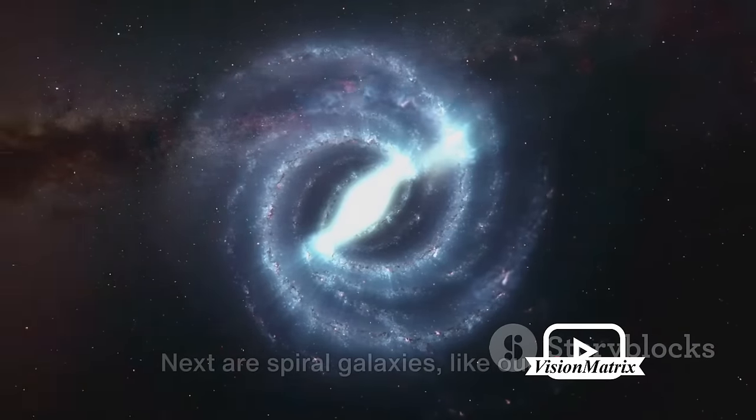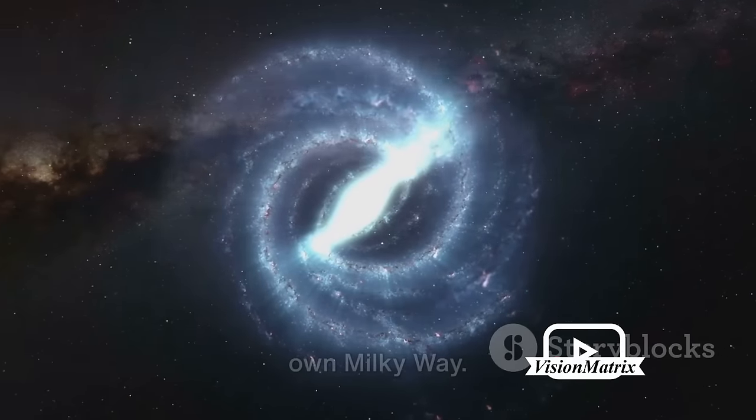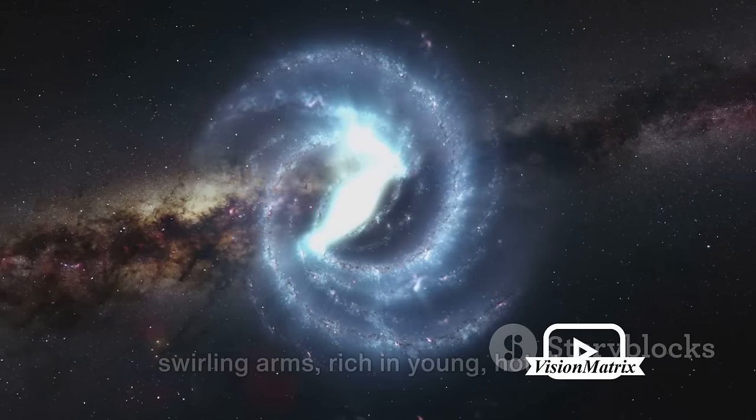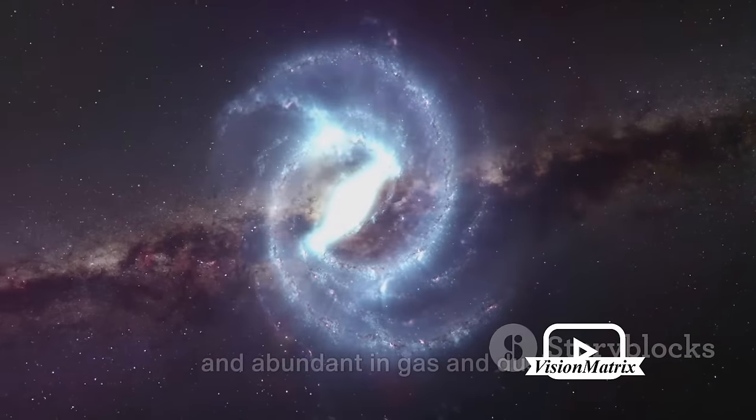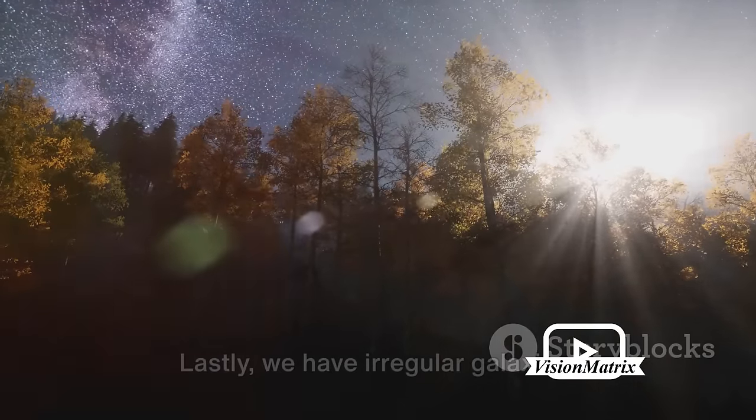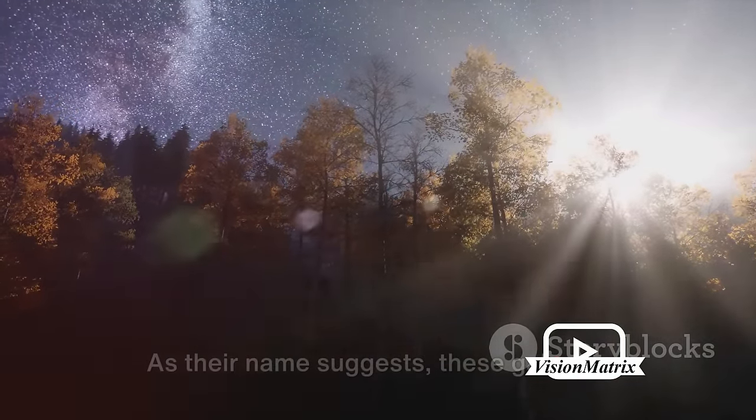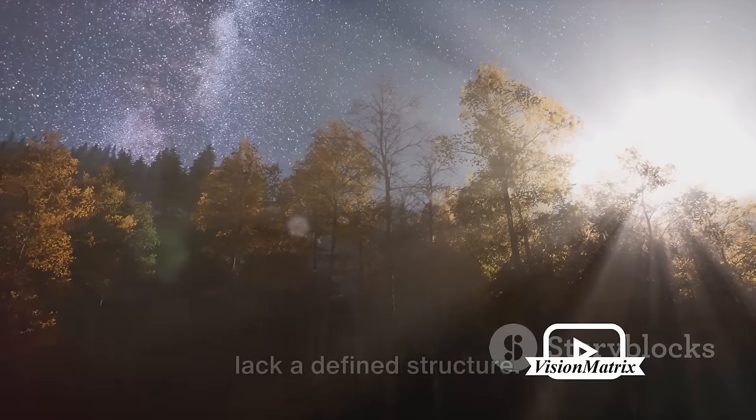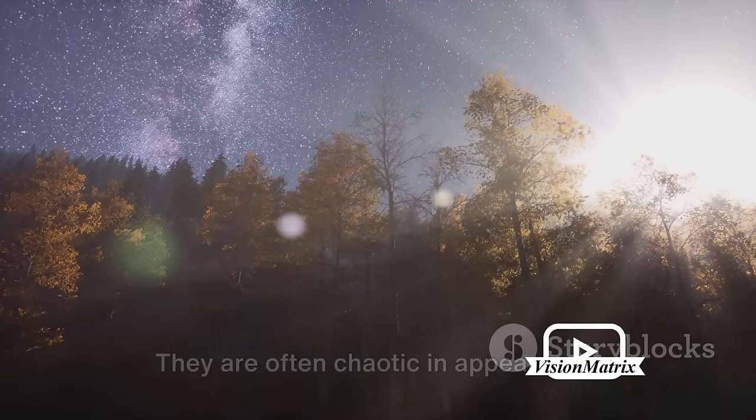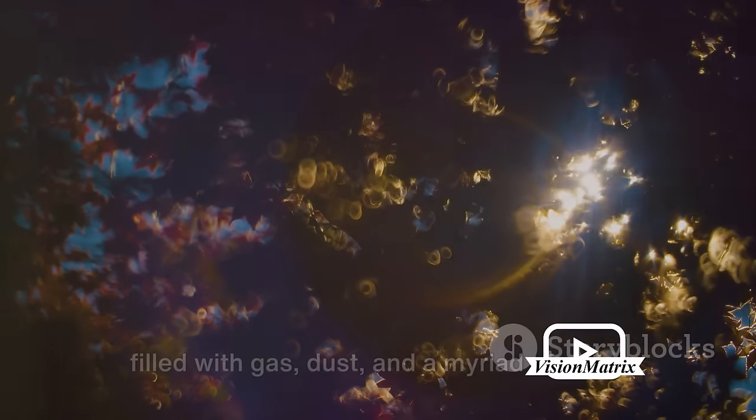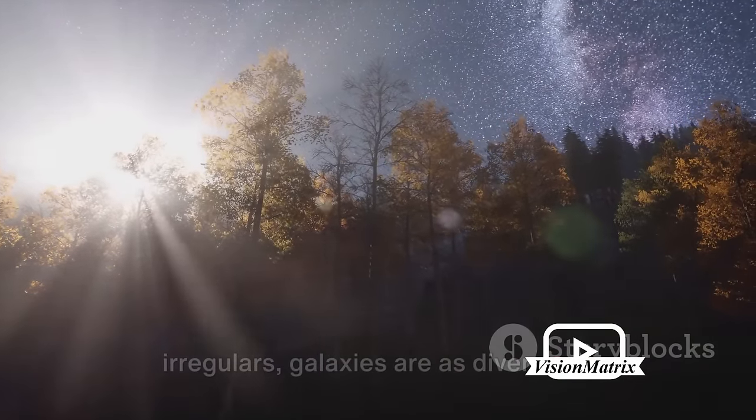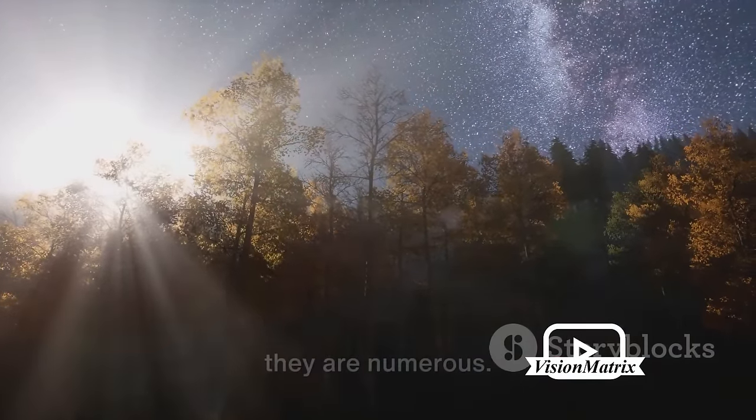Next are spiral galaxies, like our very own Milky Way. These galaxies are characterized by their swirling arms, rich in young, hot stars and abundant in gas and dust. Lastly, we have irregular galaxies. As their name suggests, these galaxies lack a defined structure. They are often chaotic in appearance, filled with gas, dust and a myriad of stars. From the immense glowing ellipticals to the vibrant spirals and the chaotic irregulars, galaxies are as diverse as they are numerous.